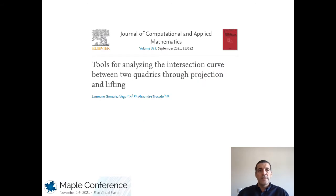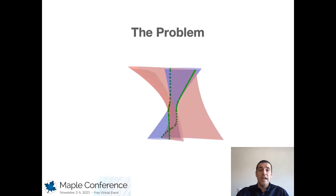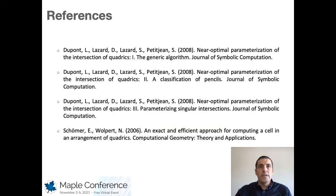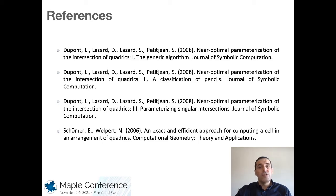We want to present algebraic, geometric and computational issues that we have faced when implementing in Maple the algorithm for analyzing and visualizing the intersection curve between two quadrics as presented in this paper. Our problem is how to simply and as quickly as possible determine the intersection curve between two quadrics. In the literature, we can find three papers from 2008 where the problem is solved and the intersection curves are characterized, but the implementation of this algorithm is too complicated. With our work, we aim to present a more direct and easy way to implement one algorithm to determine the intersection curve between two quadrics using a different approach.